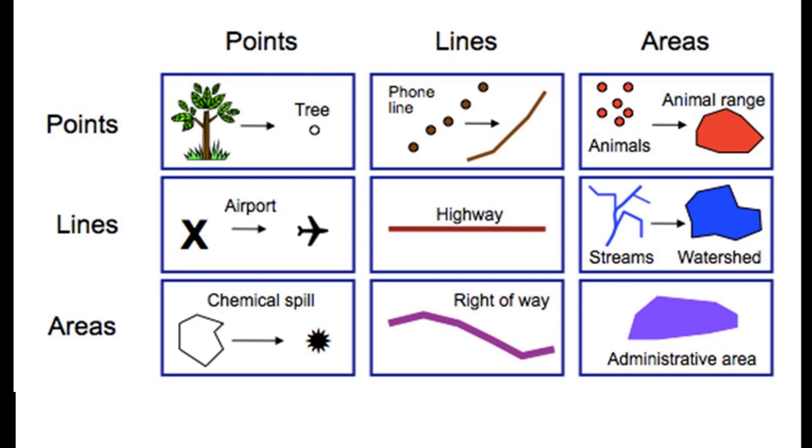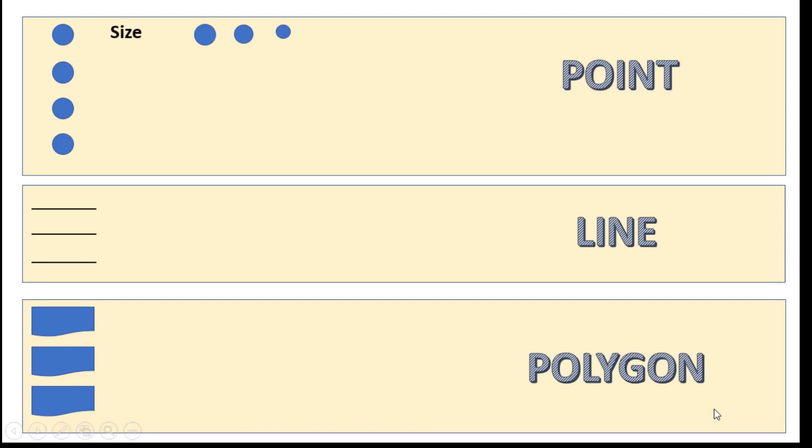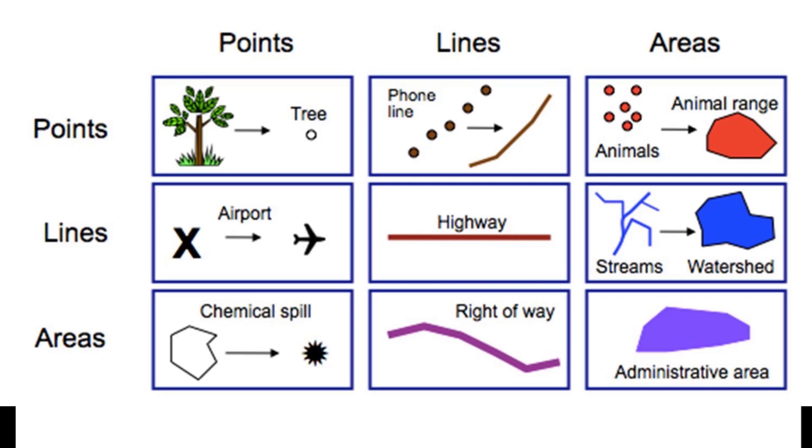When we consider representing geographic features with points, it could be the location of a fire hydrant or it could be the location of a town in a certain country or anything. We may take into consideration some of the properties.